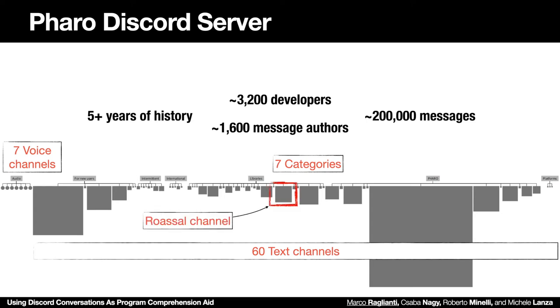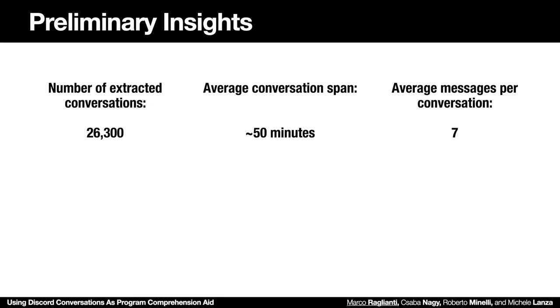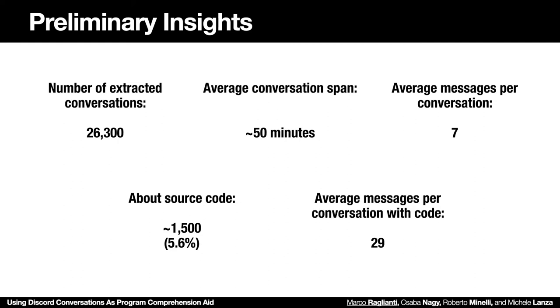In particular we focus on an example in the Rossa channel. Some preliminary insights: we extracted 26,000 conversations, with an average time span of around 50 minutes and a length of 7 messages. When we consider those about source code — roughly 5–6% — we can see that they are longer, with an average of 29 messages, more than 4 times the overall average.